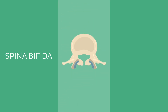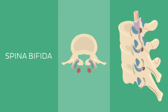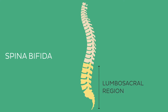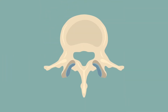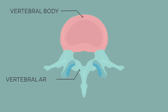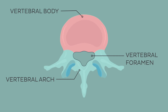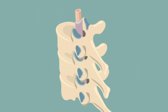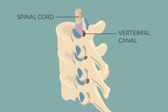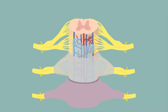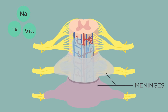In spina bifida, the failure of the neural tube to close completely disrupts the normal development of the vertebral column, resulting in an incomplete or improperly formed vertebral column, usually in its lower part called the lumbosacral region. A fully formed lumbar vertebra has basic parts: the vertebral body and the vertebral arch. These two structures enclose the vertebral foramen. When all vertebrae are fully developed and aligned, their foramina form the vertebral canal in which the spinal cord is enclosed. Within the canal, the spinal cord is enveloped by thin protective sheets called the meninges, which float in a thin layer of cerebrospinal fluid. The cerebrospinal fluid flows through a system of ventricles and canals, nurturing and cushioning the brain and spinal cord.